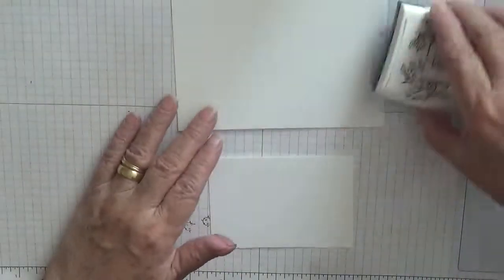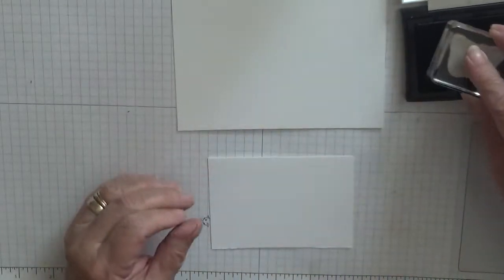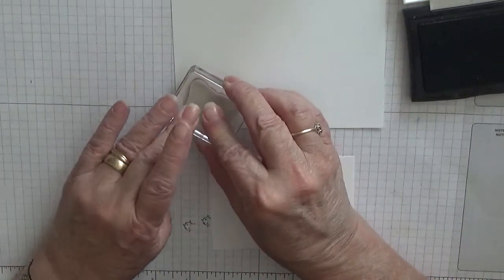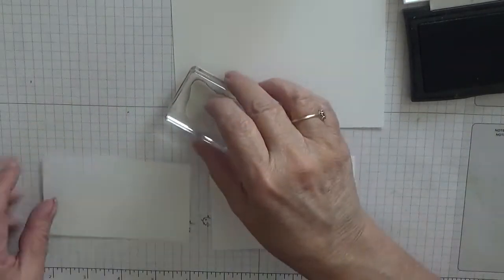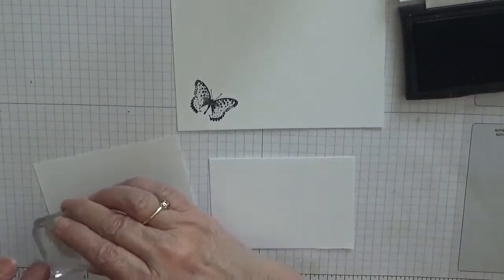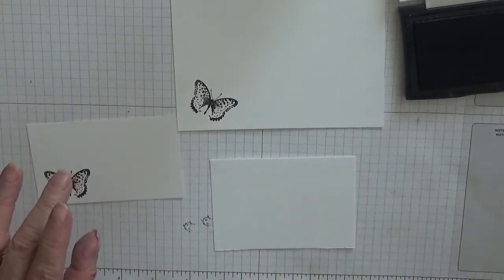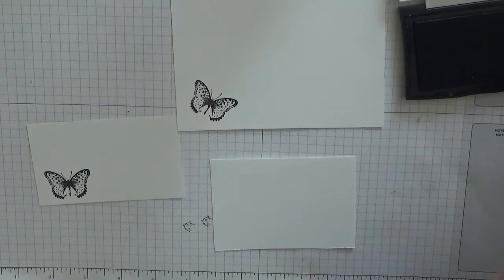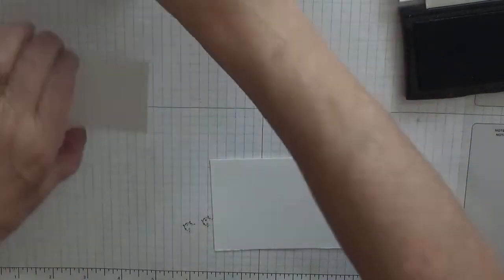To get started now I've stamped all this in Versafine. Let's do the butterfly first. So that was the stamp nearest to me, and I also need to stamp one on a bit of scrap to cut out. So you'll need a bit of scrap to cut out the butterfly.